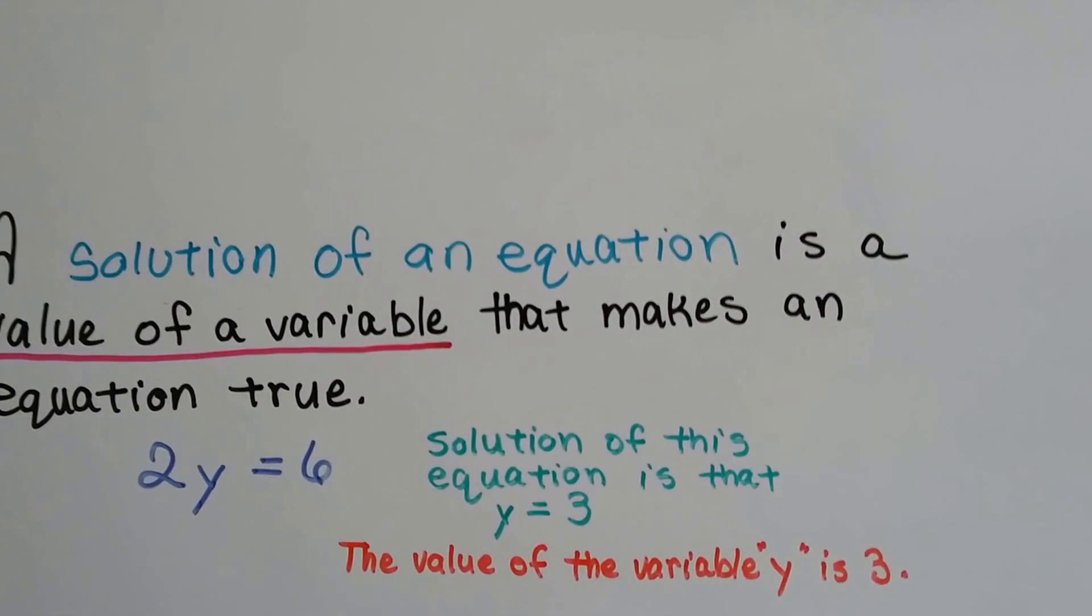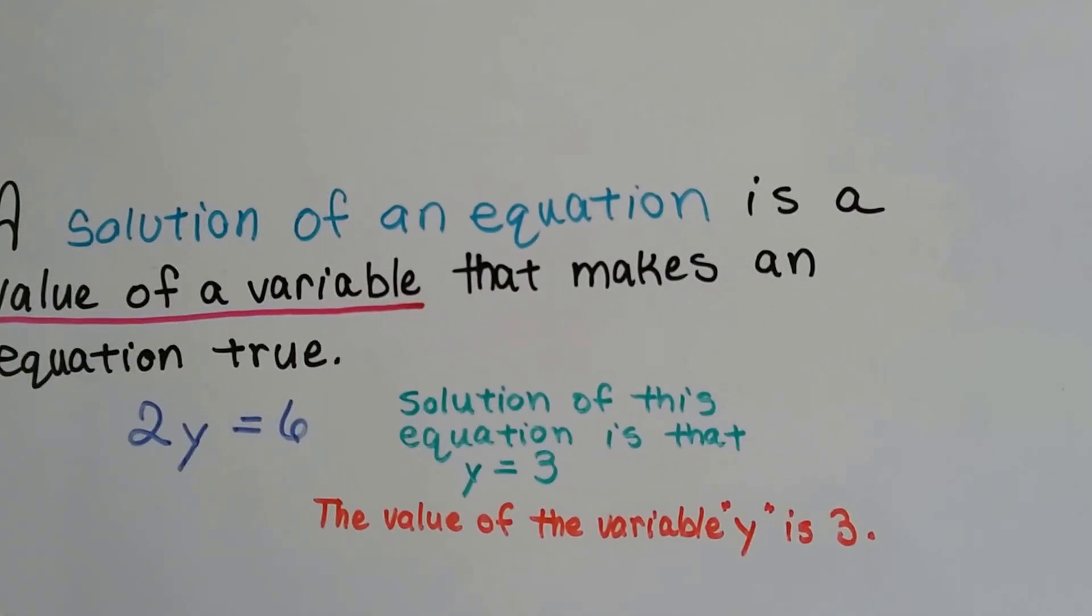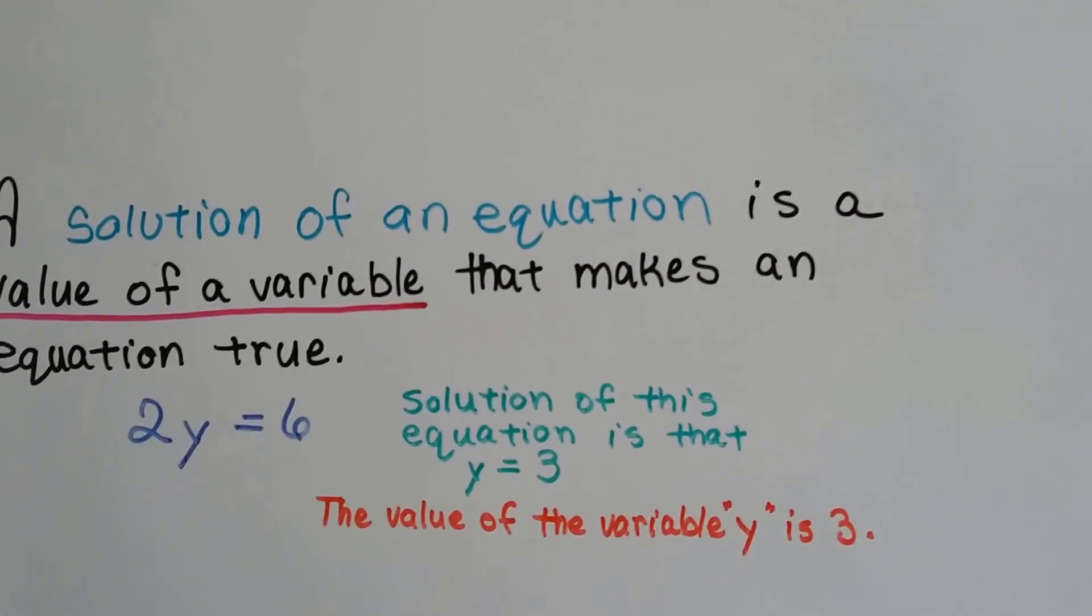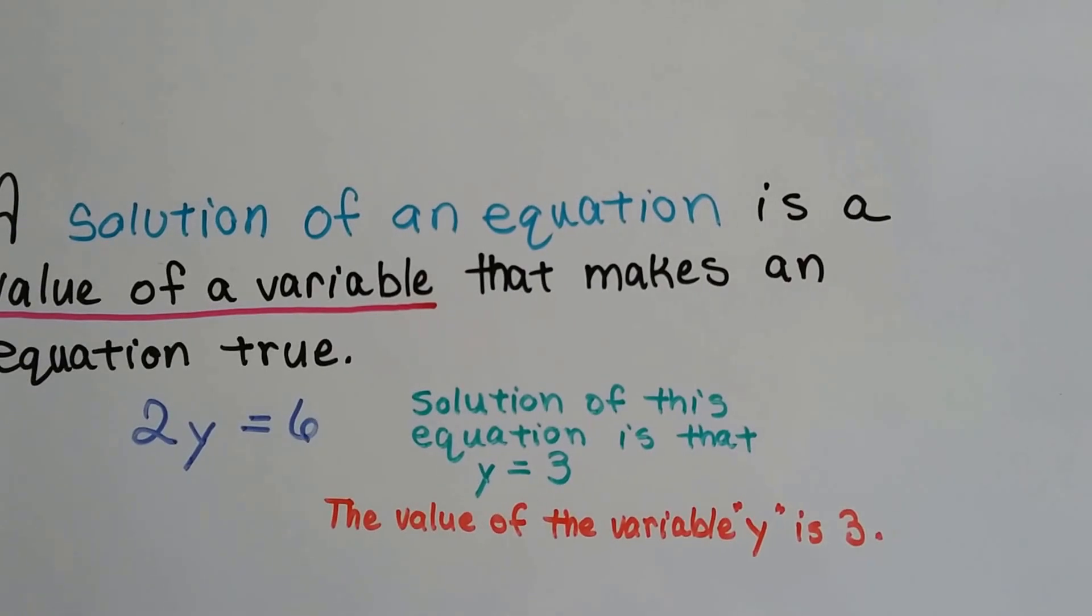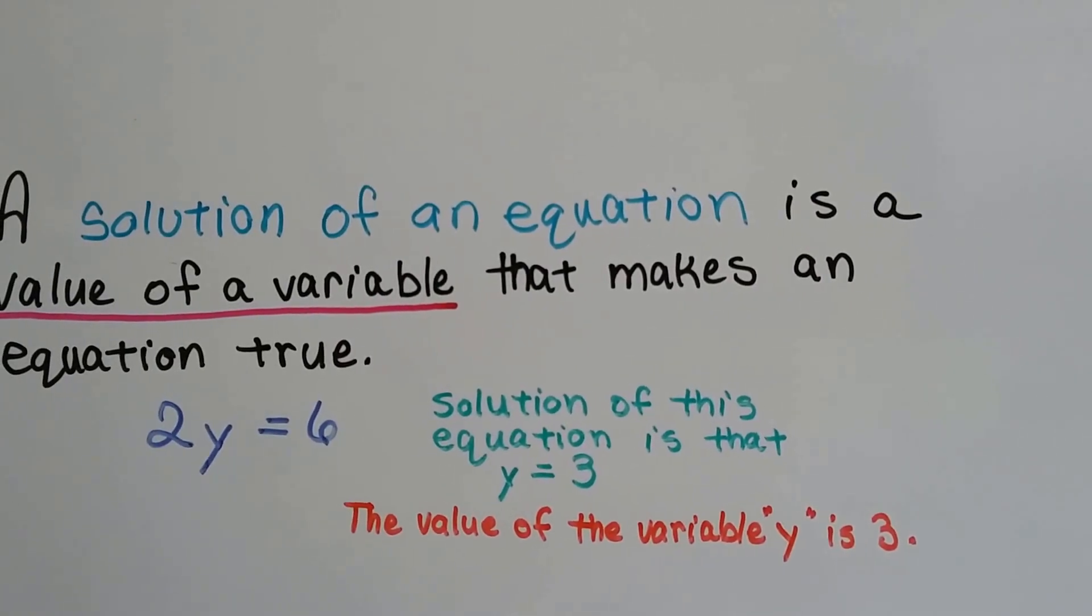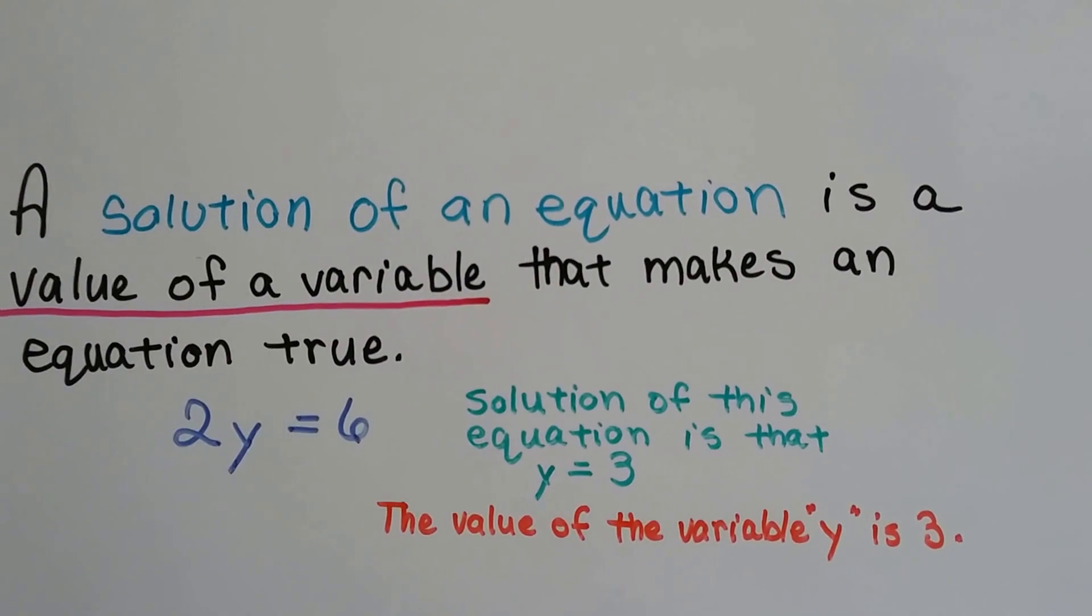2y equals 6. Y is our variable. The solution of this equation is that y equals 3, because 2 times 3 equals 6. The value of the variable y is 3.